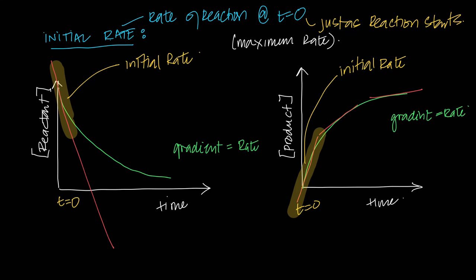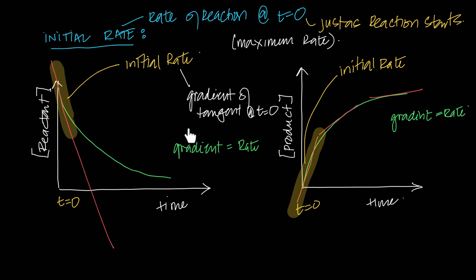To find the initial rate, you find the gradient of the tangent at time equals zero. The tangent drawn at t=0 gives you this gradient. Note that the tangent for reactant will be negative and for product positive, but their magnitudes are the same — the initial rate of reactant decrease equals the initial rate of product increase.